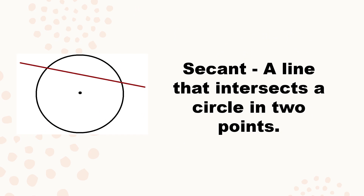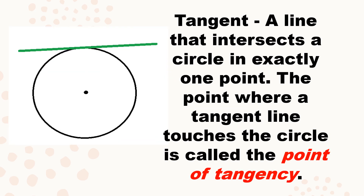A secant is a line that intersects a circle at two points. It starts from the outside and passes through the circle at exactly two points — that's a secant line. A tangent is a line that intersects a circle in exactly one point. It comes from the outer part of the circle and touches the circle at exactly one point. The point where the tangent line touches the circle is called the point of tangency.